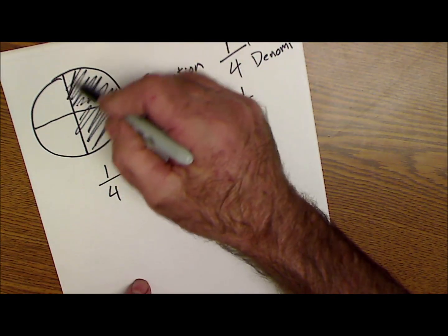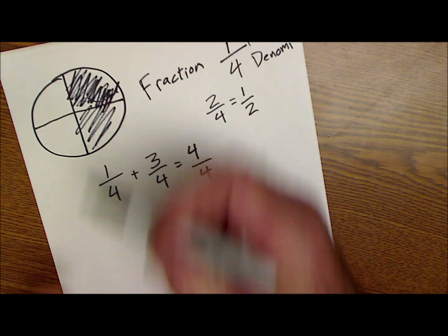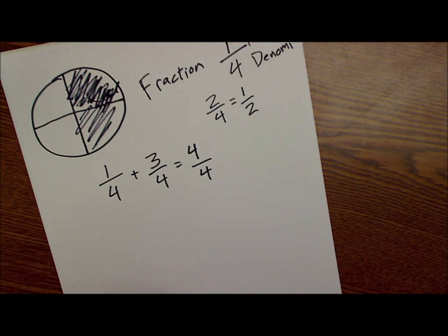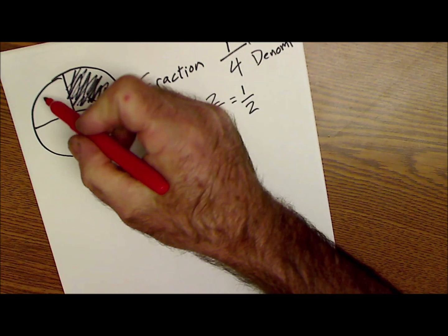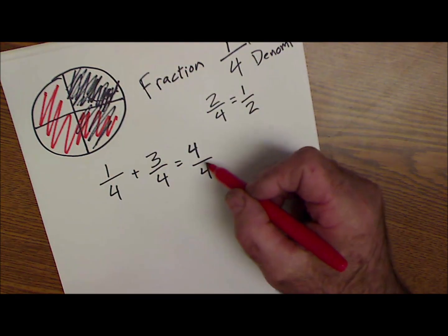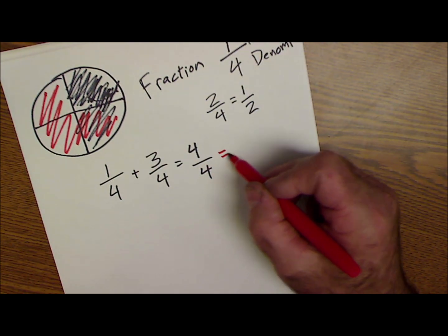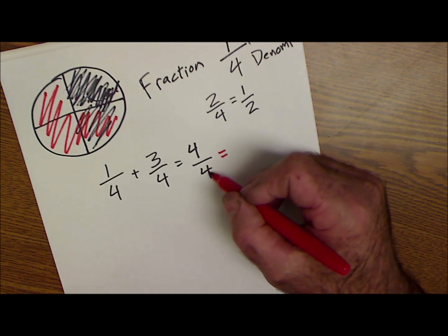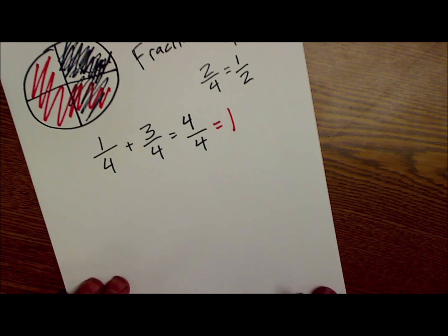If I have one quarter right here and three quarters right here, I have one quarter plus three quarters, and that's going to give me my four quarters. Four goes into here one time, four goes into there one time, or just one whole.